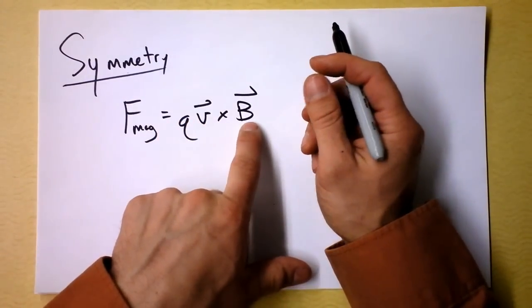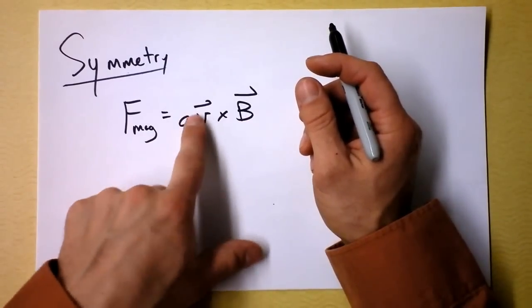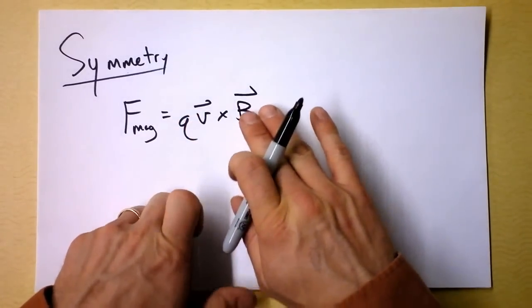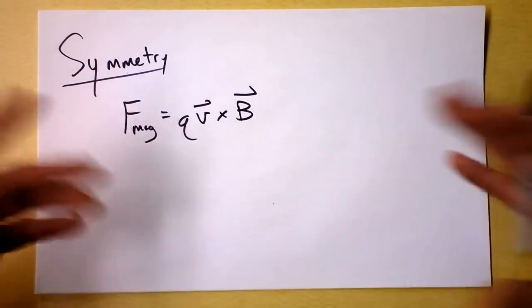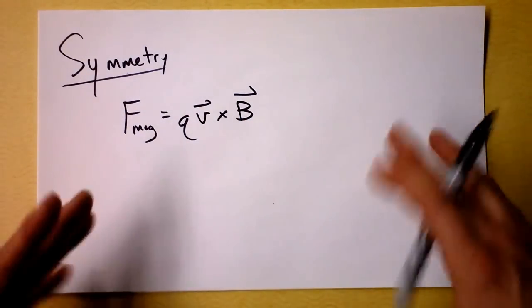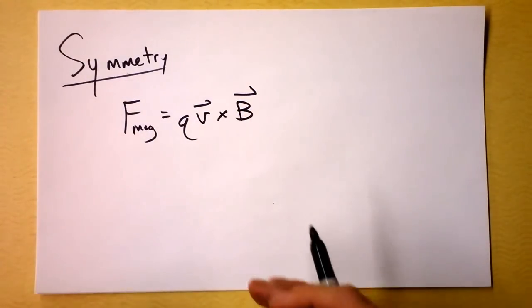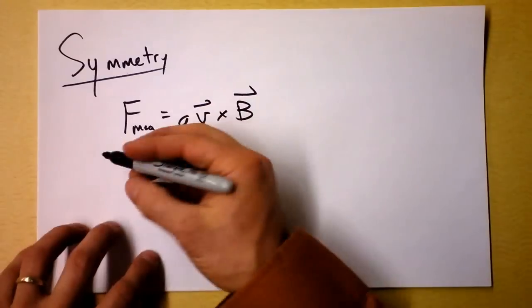Because it's kind of the magnetic field of the moving charges interacting with the other magnetic field that cause this magnetic force. Because you know magnetic force really only applies to magnets. So, moving charges must actually become a magnet.